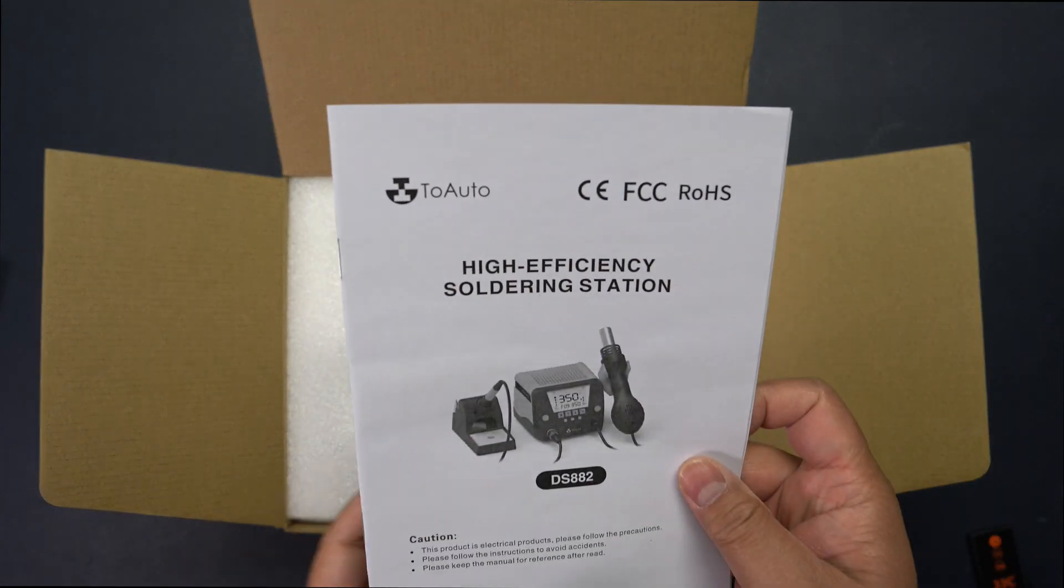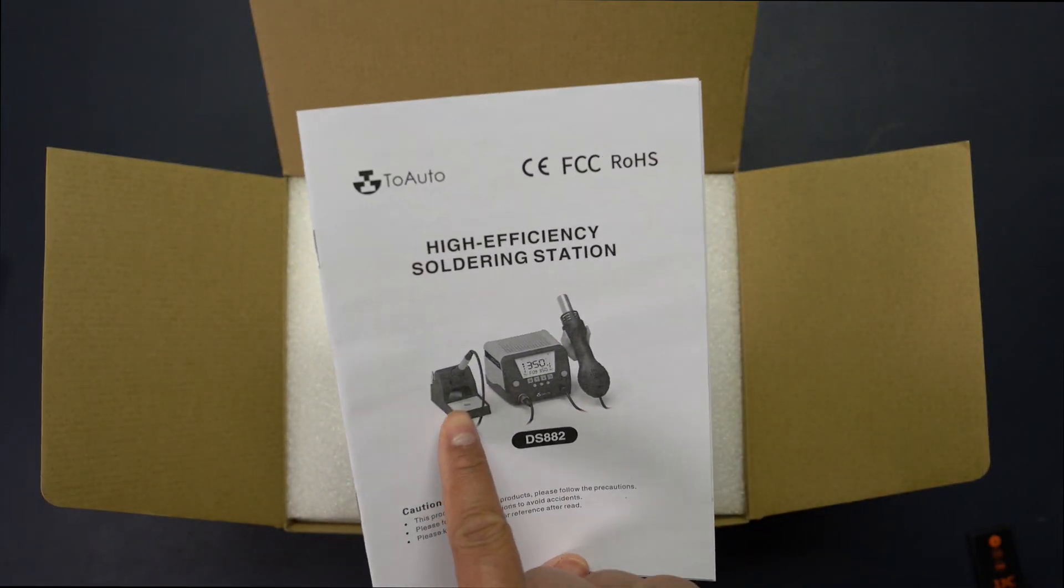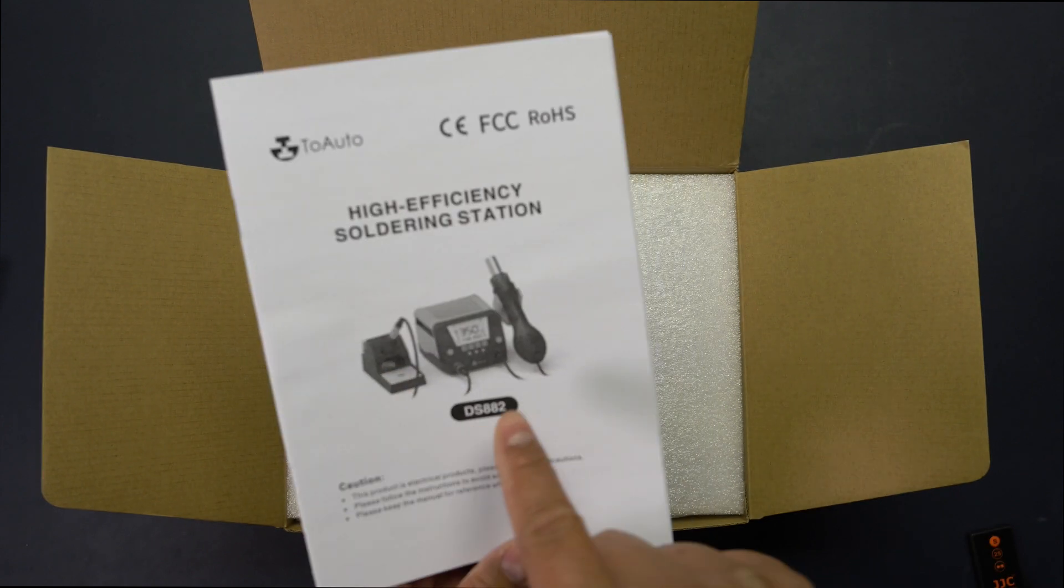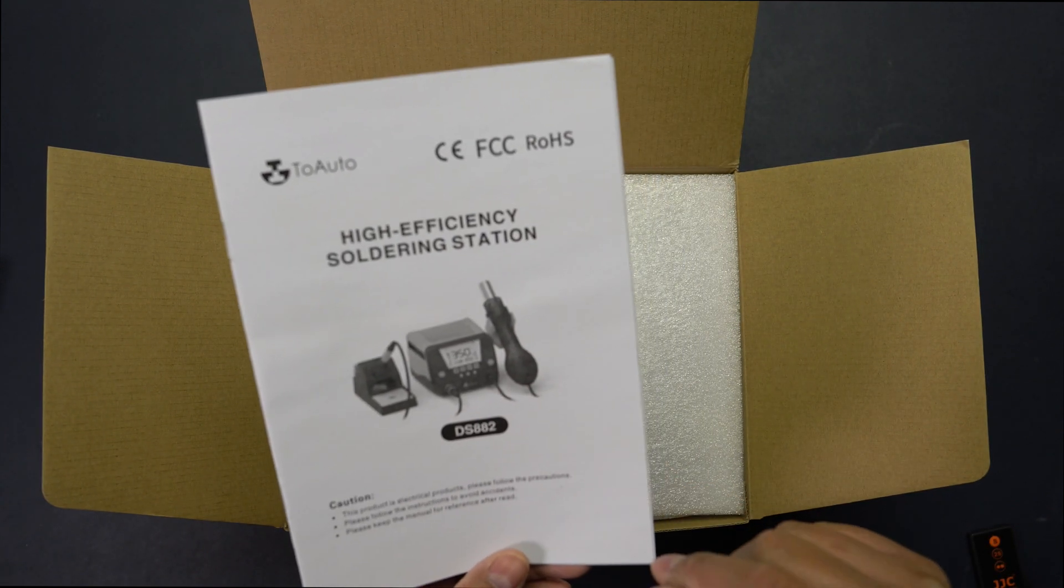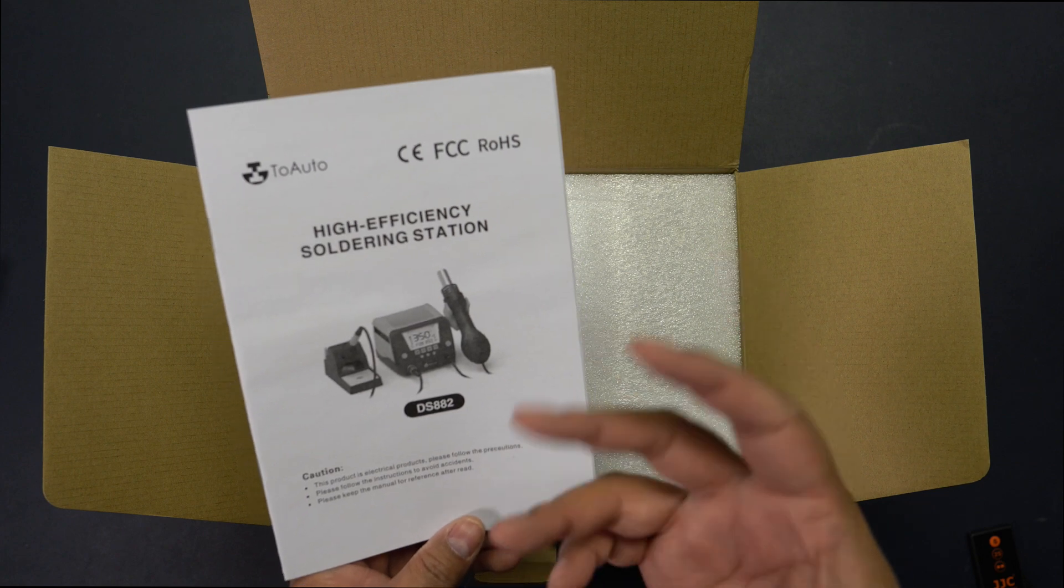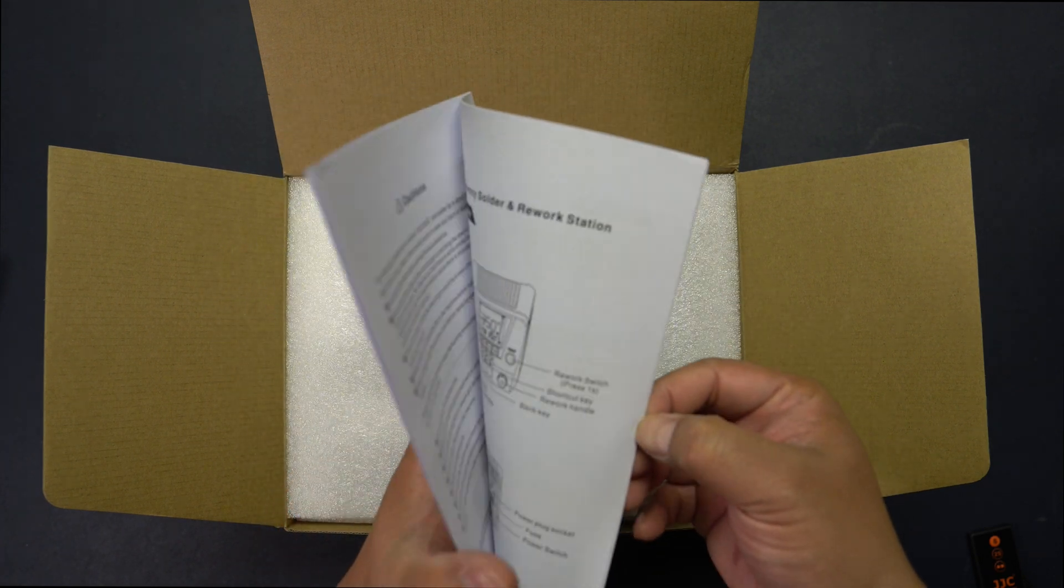This is what it looks like. The reason why I picked this one is because it comes with a soldering station but it also comes with this little heat gun which is good for melting those little shrink wrap things around your wires.